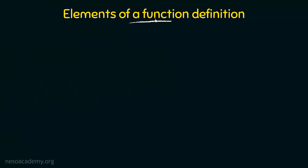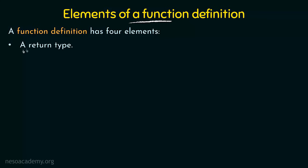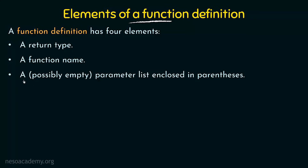We will discuss the elements of a function definition. A function definition has four elements: first, a return type; second, a function name; third, a parameter list enclosed in parentheses, which can also be empty; and fourth, a function body. Keeping these things in mind, let's take a look at that code from the previous slide and try to identify these elements.